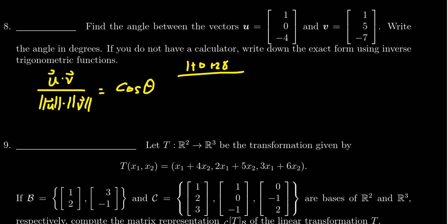We have to take the length of the vector u. So that's going to be 1 plus 0 plus 16, all inside the square root. And then we're also going to take the length of v. So we get 1 plus 25 plus 49, all inside the square root. This is supposed to equal cosine of theta.